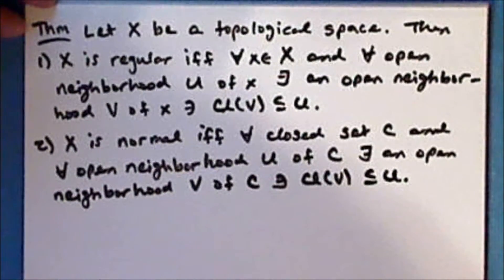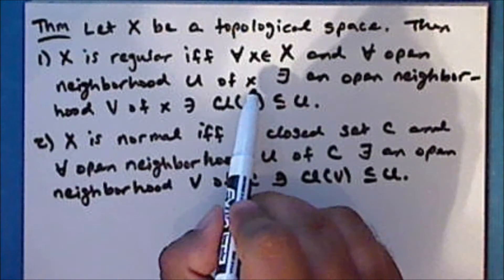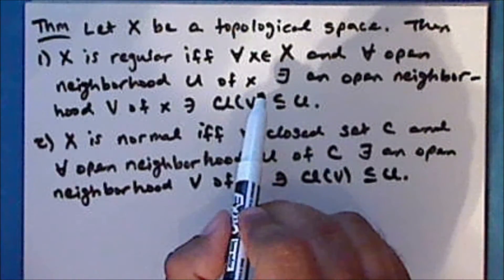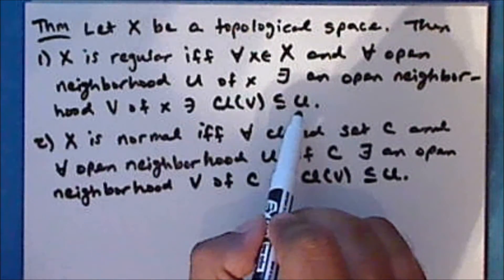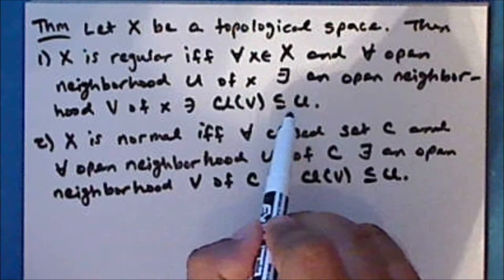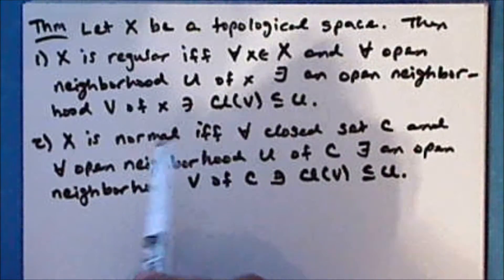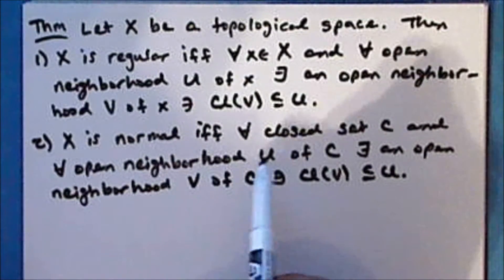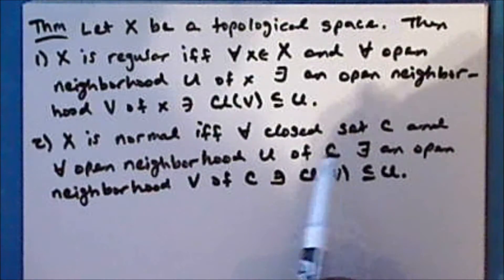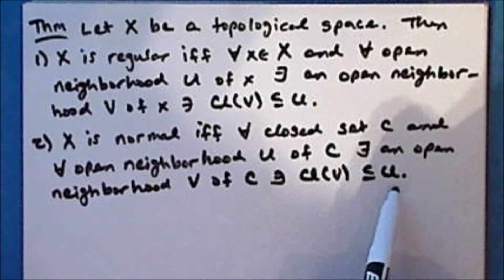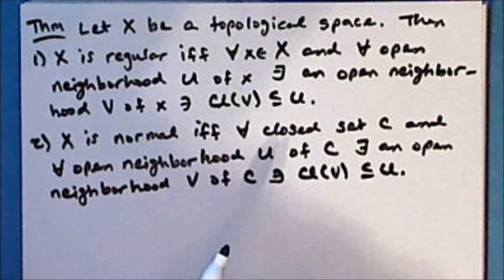Notice that this theorem states that in a regular space, for every open neighborhood of a point, there is another open neighborhood of that point whose closure is completely contained in the first open neighborhood, and this condition is equivalent to the space being regular. Similarly, in a normal space, for every open neighborhood of a closed set, there exists another open neighborhood whose closure is completely contained in the first, and this condition is equivalent to the space being normal.